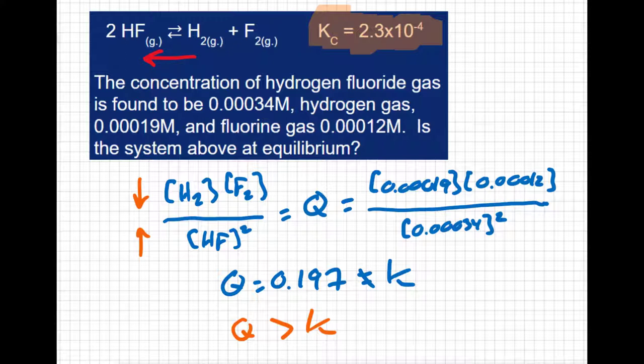So because Q is bigger than K, our reaction is going to shift to the left. As a review, if Q equals K, we're at equilibrium. If Q is bigger than K, the reaction will shift to the left. And then hopefully, it makes sense that if Q is smaller than K, the reaction would then shift to the right.